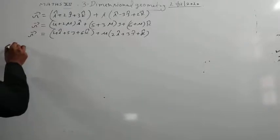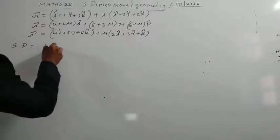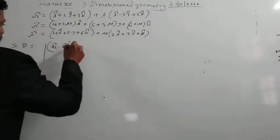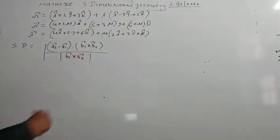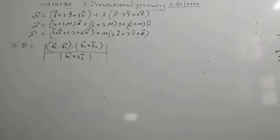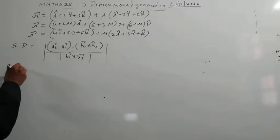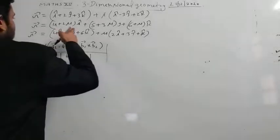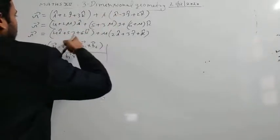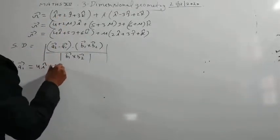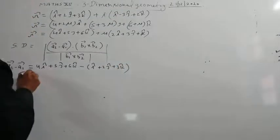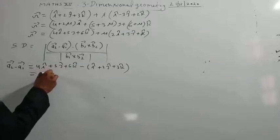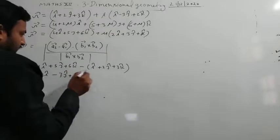We know the shortest distance formula is |(a2 minus a1) · (b1 cross b2)| / |b1 cross b2|. First we find a2 minus a1: a2 is (4i + 5j + 6k) and a1 is (i + 2j + 3k), so subtracting we get 3i + 3j + 3k.